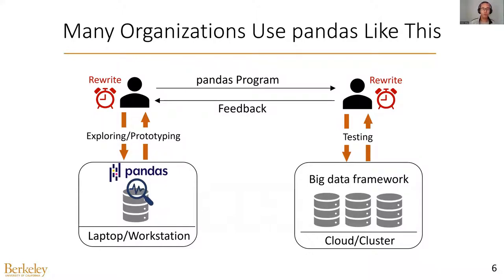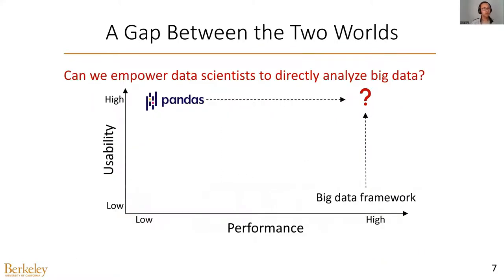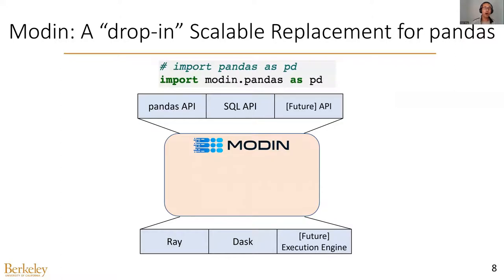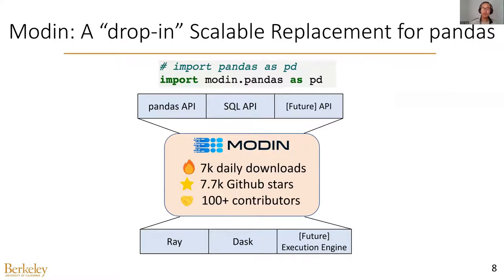This back-and-forth program rewriting can significantly consume human time. So the question is: can we empower data scientists to directly analyze big data while still using their beloved tools without worrying about scalability? Modem addresses this gap. With only one line of change, end users can use the Pandas API to analyze big data, which is executed on distributed data processing frameworks. Its daily downloads are more than 7,000 and it has over 7,000 GitHub stars.